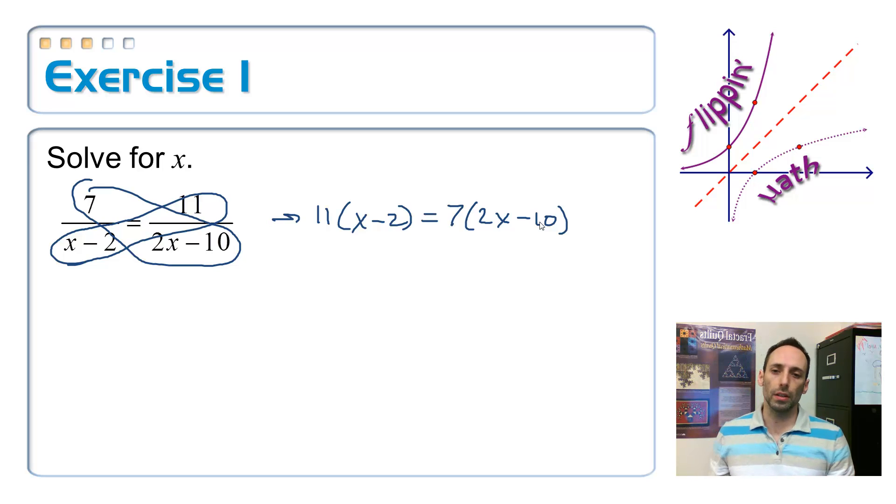Can you guess what the most common mistake is on solving these? That's right, they will forget to multiply the 11 times both the x and the negative 2. Usually they'll multiply it times x and get 11x, but then forget also that it's 11 times negative 2, so negative 22. So over here we have 14x minus 70.